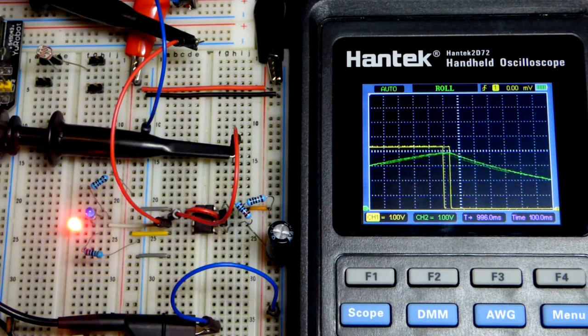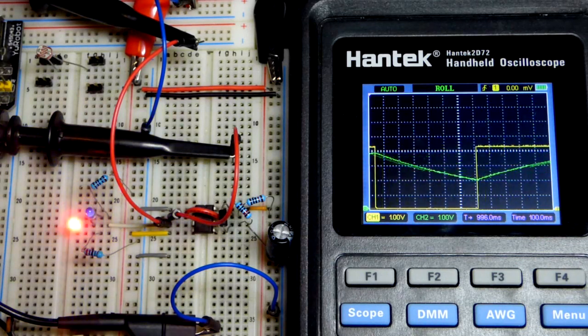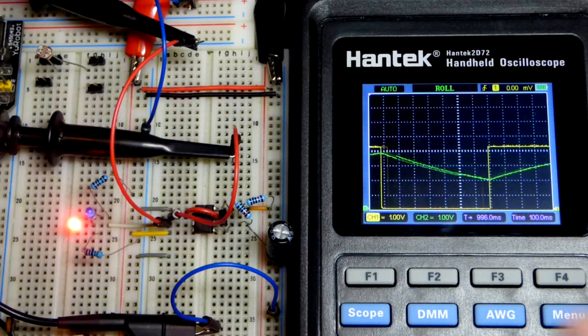While the output is high, the capacitor is charging. And when the output is low, the capacitor is discharging. The capacitor is actually what is setting it.